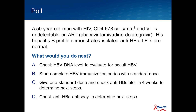So here's a poll question: a 50-year-old man on antiretroviral therapy, CD4 of 678, suppressed, with an isolated core profile and normal liver function tests — what would you do next? There appears to be a plurality between choice A (look for occult HBV) and choice C (give a standard dose and check the surface antibody titer). It turns out the guidelines suggest you should do C, and I'll go into that in more detail.